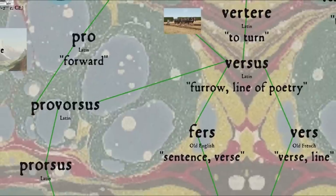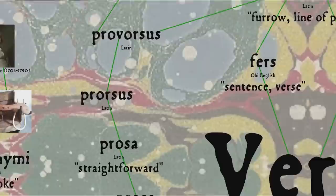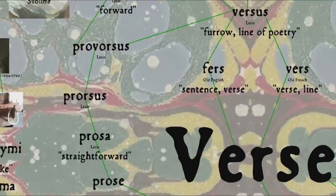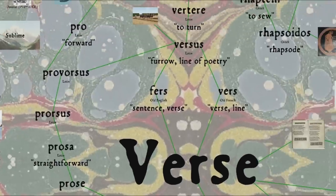When combined with the Latin prefix pro, forward, versus also leads to the form proorsus, thus prosus, and finally prosa, literally straightforward, referring to straightforward or direct speech without the sophisticated ornamentation found in poetry. So it turns out that the English word prose, in fact, comes from the same root as verse.